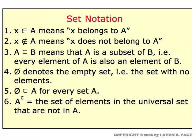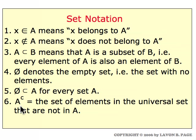Let's review the set notation covered so far. We have the membership symbol: X is an element of A, or X belongs to A. We have the symbol that negates that: X does not belong to set A. We have the subset symbol. We have a symbol for the empty set — the set with no elements. The empty set is a subset of every set, and when discussing sets in the context of a universal set, the complement of a set is all things in the universal set that don't belong to the set we're talking about.